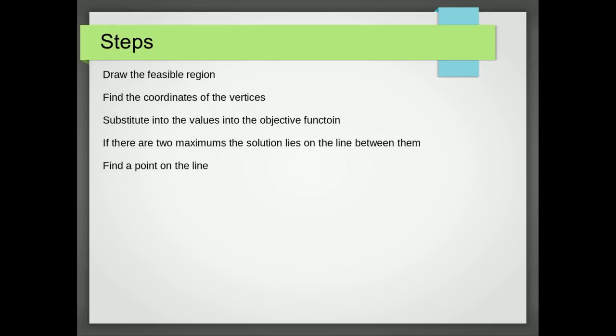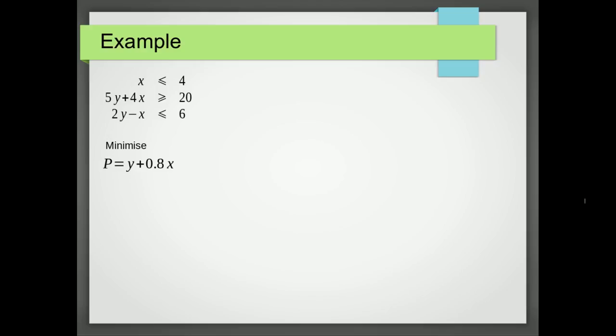It's really important that when we give our working for these problems that we don't just give the equation of the line and the two endpoints, but we also show that it's possible to get a point from between those by actually finding a point for the person who's reading our problem.